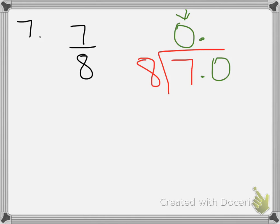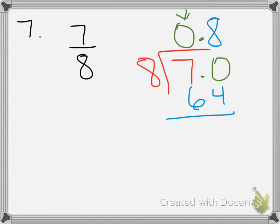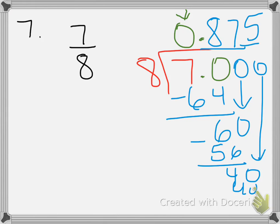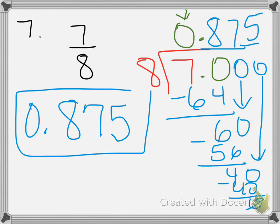How many times does 8 go into 70? Eight times 8 is 64, so 8 goes in 8 times with 6 left over. Drop a zero: 8 goes into 60 seven times — that's 56 — with 4 left over. Add a zero: 8 goes into 40 five times exactly, remainder zero. So your decimal is 0.875. That should have been your final answer for number 7.